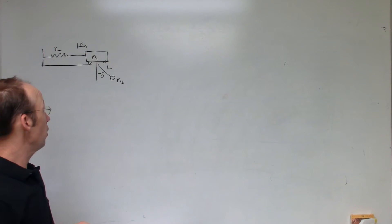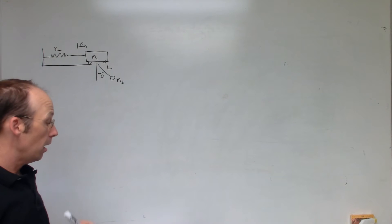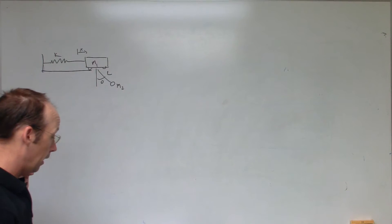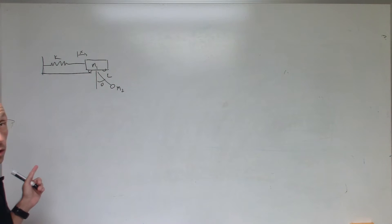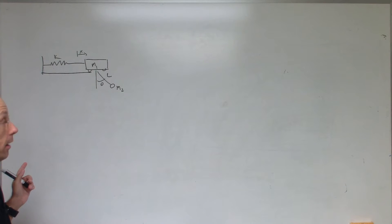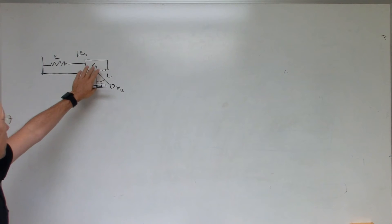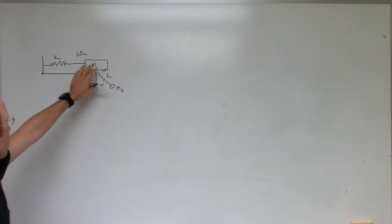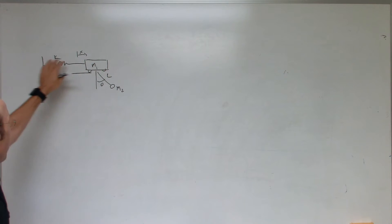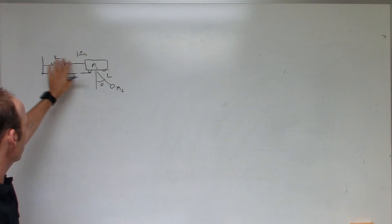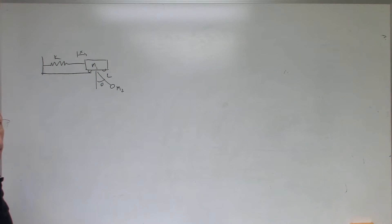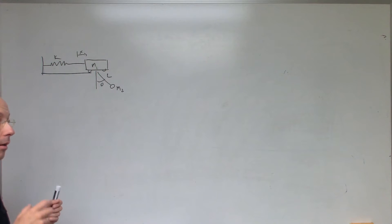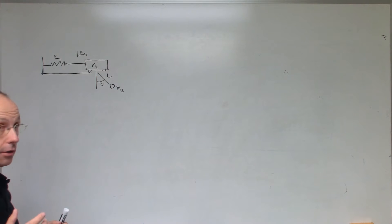Here's our next problem — it's actually from the book. It's a mass on a cart connected to a spring with no friction, so it can oscillate back and forth, but then there's a pendulum hanging underneath it. It's kind of like a mass on a spring plus a pendulum.